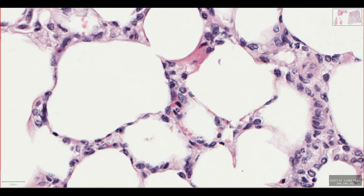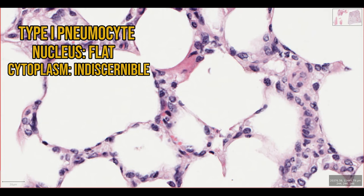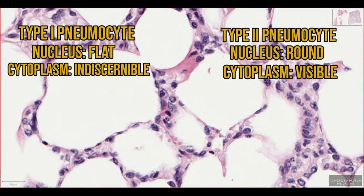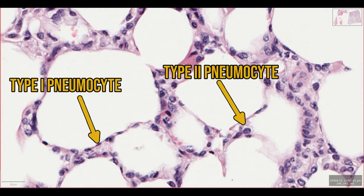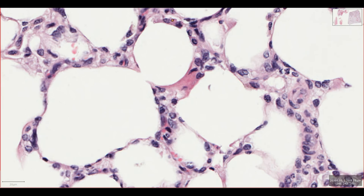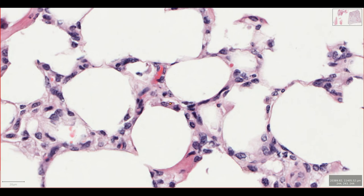My rule of thumb is to look at the nuclei and cytoplasm. A small flat nucleus with indiscernible cytoplasm is likely to belong to a type 1 pneumocyte, and a rounder nucleus with more cytoplasm is probably a type 2 pneumocyte. Underneath the epithelium there is minimal connective tissue with a few fibrocytes which surround the blood vessels. The blood vessels in alveolar walls are capillaries which can fit only a single red blood cell through at a time. In this section it's quite difficult to appreciate any blood vessels at all.